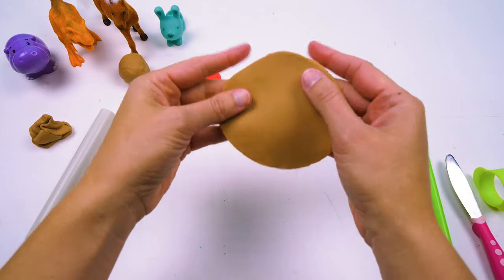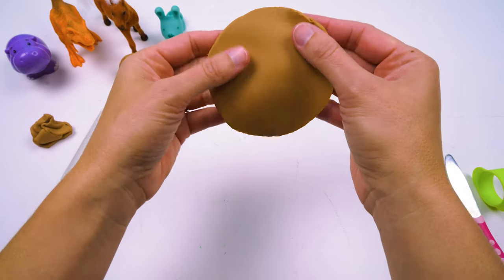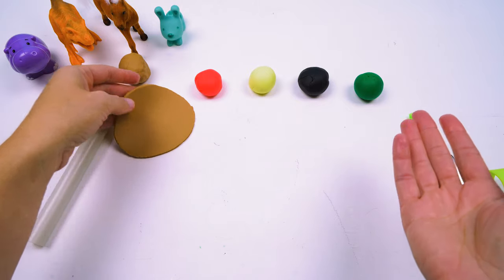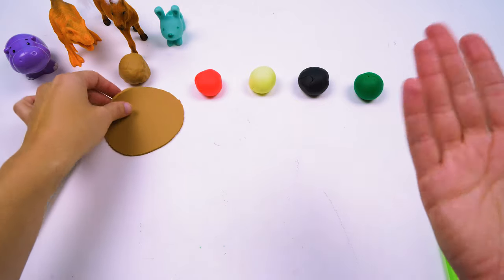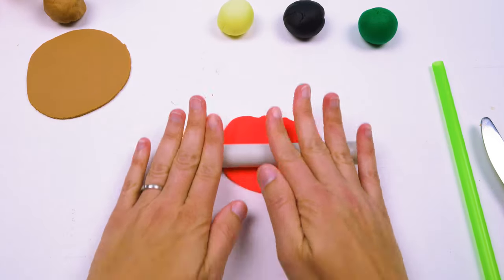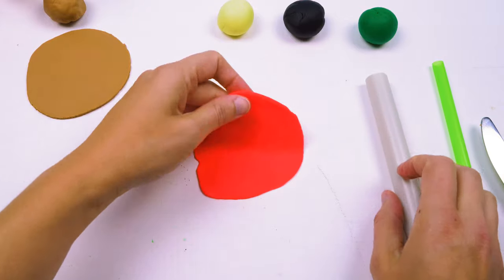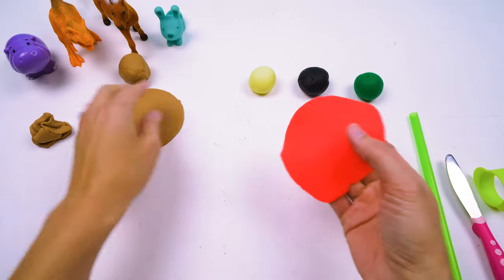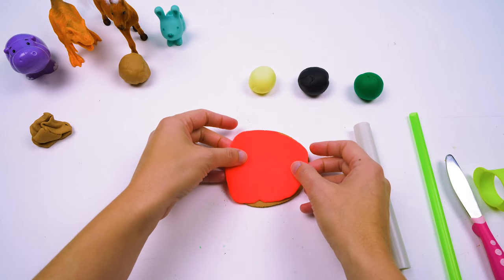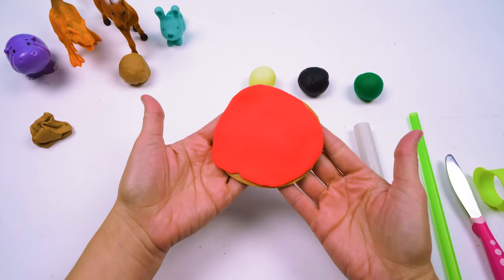All right, so we have our pizza crust. And then what comes next on a pizza? Yeah, the sauce of course. You can't have pizza without sauce. That looks pretty good. So let's add it to the top of our pizza crust. Oh, that looks tasty.